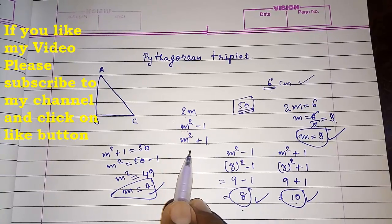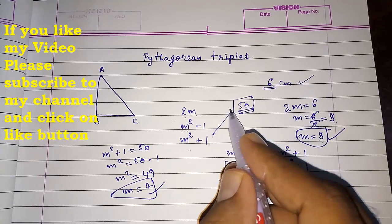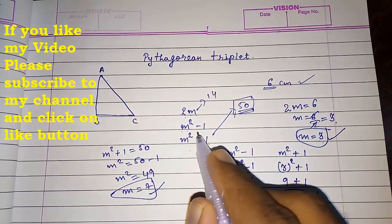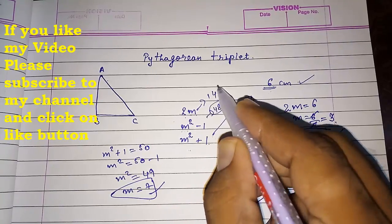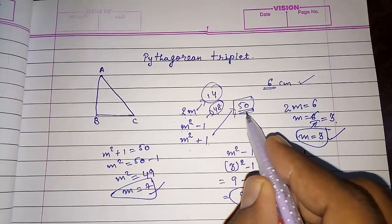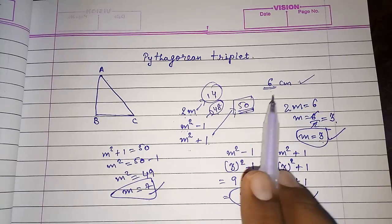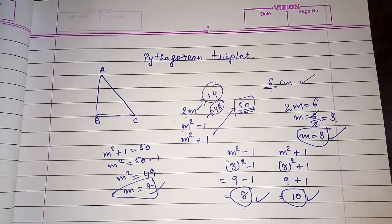Substituting m equals 7: 2m gives 14, and m squared minus one gives 49 minus one, which is 48. So the three sides are 14, 48, and 50. This is how you can find all three sides of a Pythagorean triple when one side is given. Thank you for watching — please subscribe to my channel for more such videos.